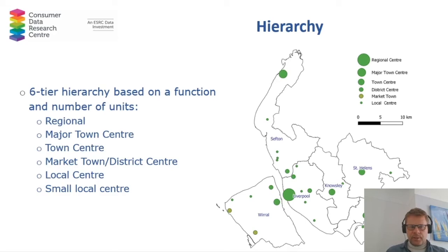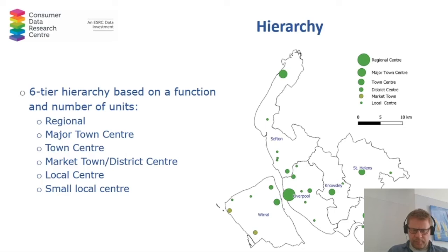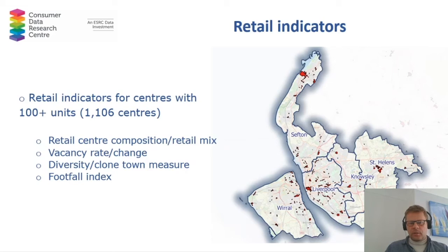In terms of the hierarchy, we have created a six-tier hierarchy based on retail centre function and size, and that hierarchy is closely aligned with the official government hierarchy. Here we've got Liverpool City Region showing only the larger centres. We have one regional centre, which is Liverpool, then a couple of major town centres, then a small number of town centres — pretty much each local authority has either a town centre, major town, or regional centre. Then we have a number of district centres or market towns and local centres. On the map of Liverpool City Region, we can see all retail centres, and the vast majority of them are very small — around 150 are classified as small local centres.